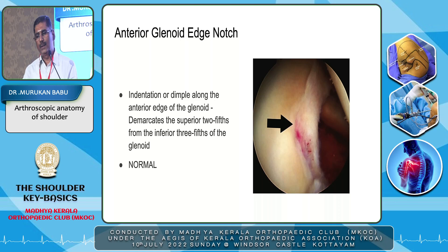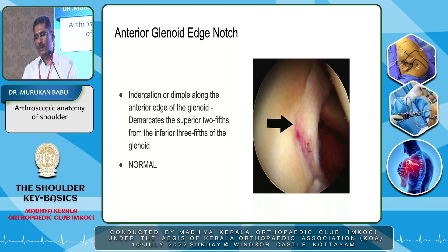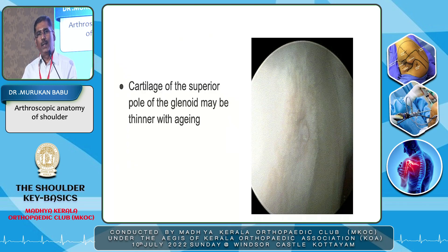Another variation is the anterior glenoid edge notch — an indentation or dimple along the anterior edge of the glenoid that demarcates the superior two-fifths from the inferior three-fifths of the glenoid, which is also normal. Sometimes in the superior part the cartilage may be thinner, related to aging. These are the anatomical variations in the fourth position — the glenoid articular surface.